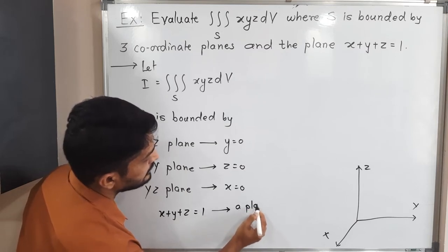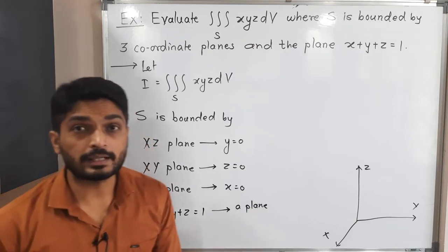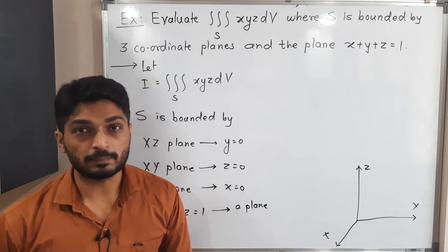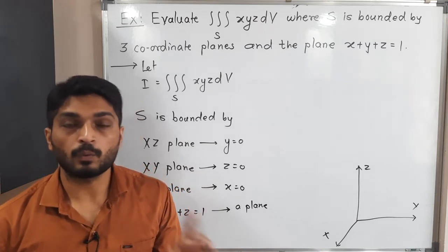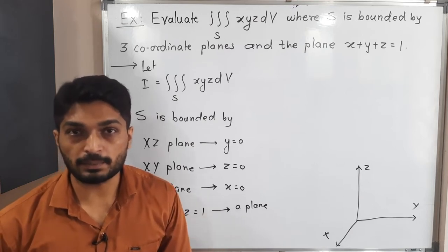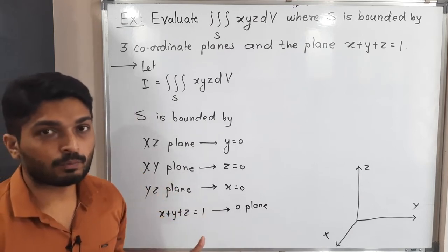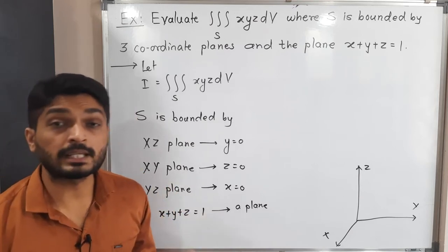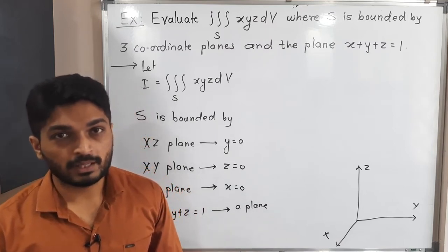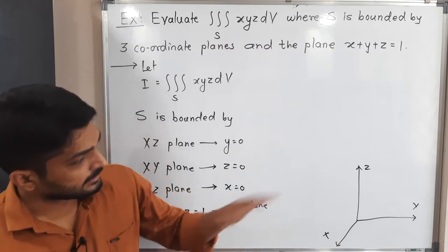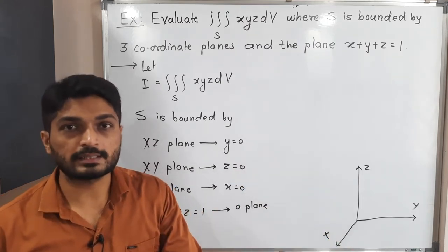To decide whether a given equation represents a plane: if the power of x, y, and z is each equal to 1, then it is a plane. Here the power of x is 1, power of y is 1, power of z is 1, so x + y + z = 1 represents a plane. This plane will cut the x-axis, y-axis, and z-axis at certain points.